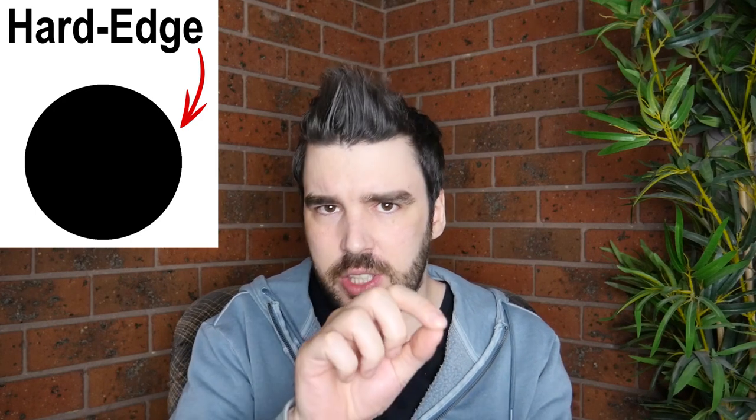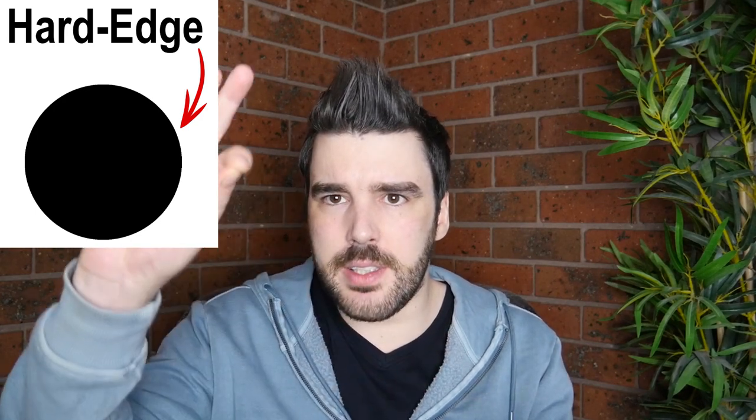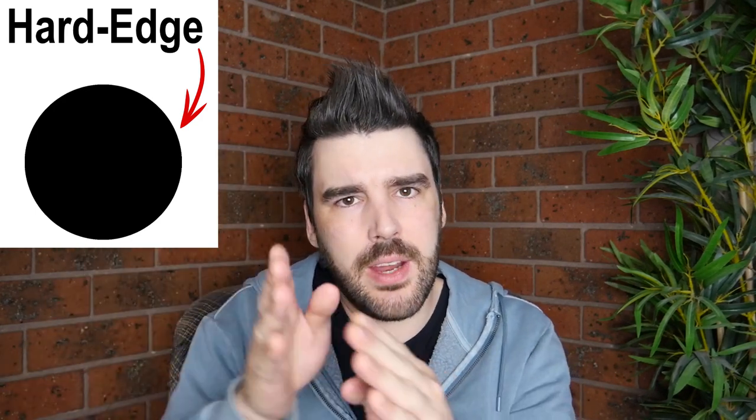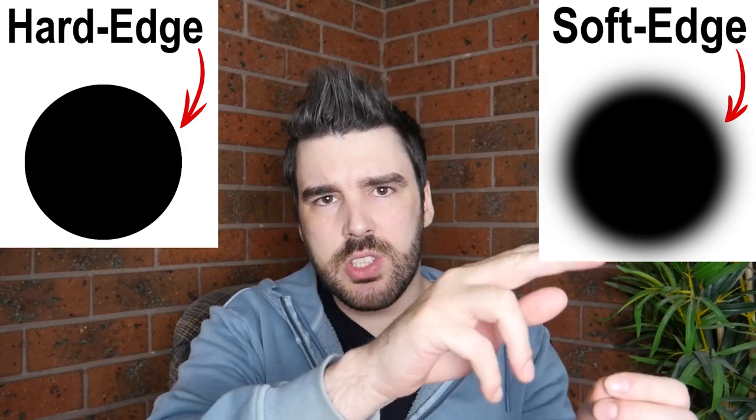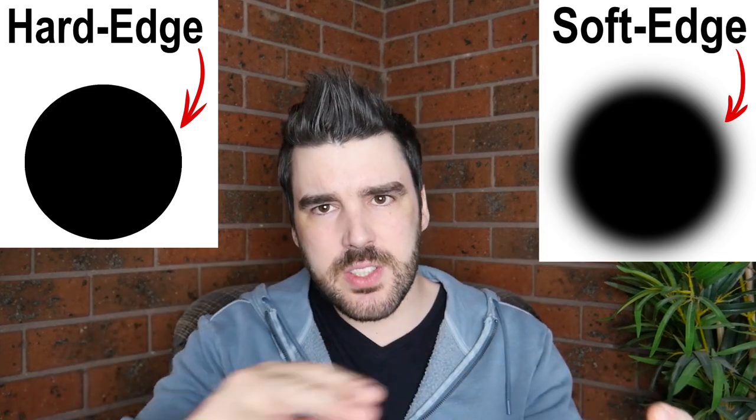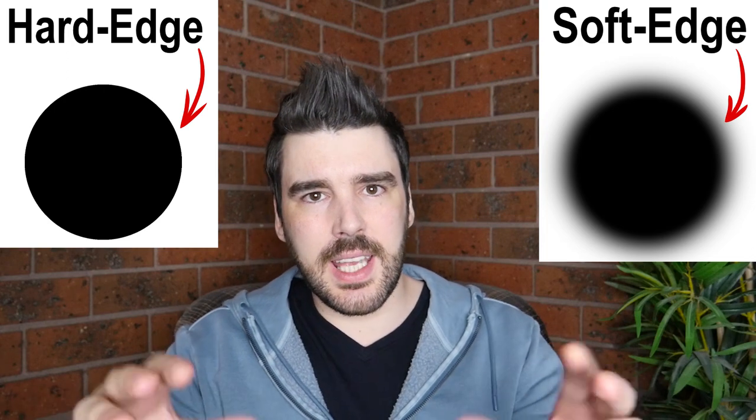The terms hard edge and soft edge are used to describe two different ways an object can be shaped in your drawing. A hard edge describes an edge of an object that is usually well defined, so there's a strong sense of where it ends. A soft edge is drawn so it disappears or fades away like a gradient.